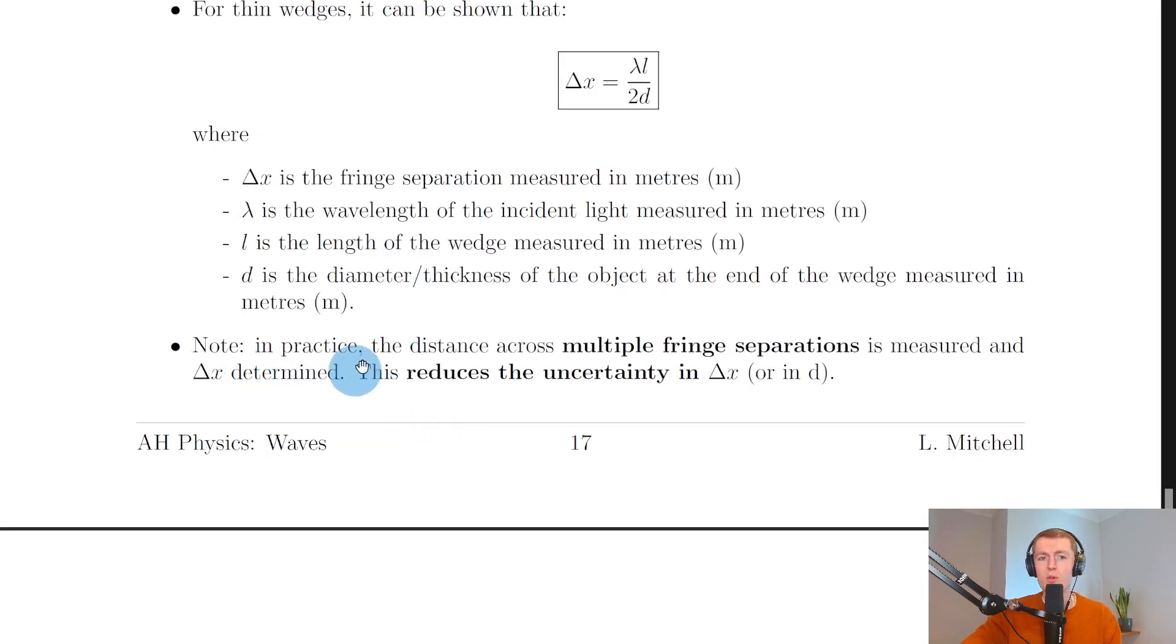Note that in practice the distance across multiple fringe separations is measured and Δx determined. This reduces the uncertainty in the fringe separation or in the thickness d. This is a common answer to questions in past papers where they ask why is the distance across multiple fringe separations measured rather than just the distance between two fringes. It's because this reduces the uncertainty in the fringe separation or in the distance d.